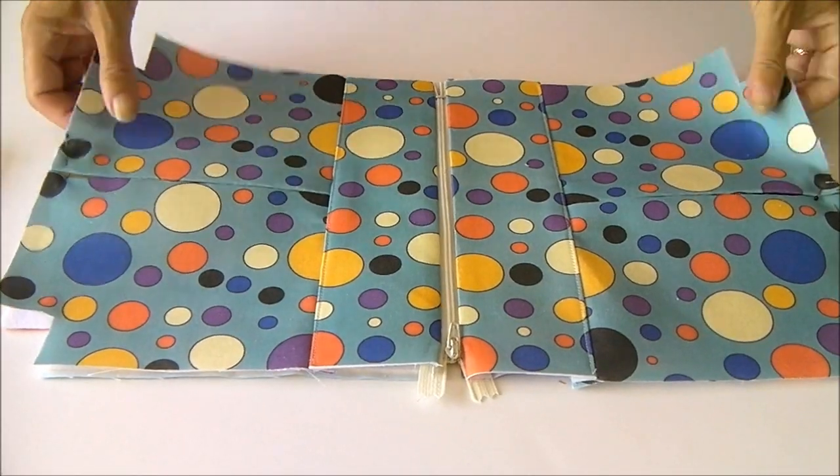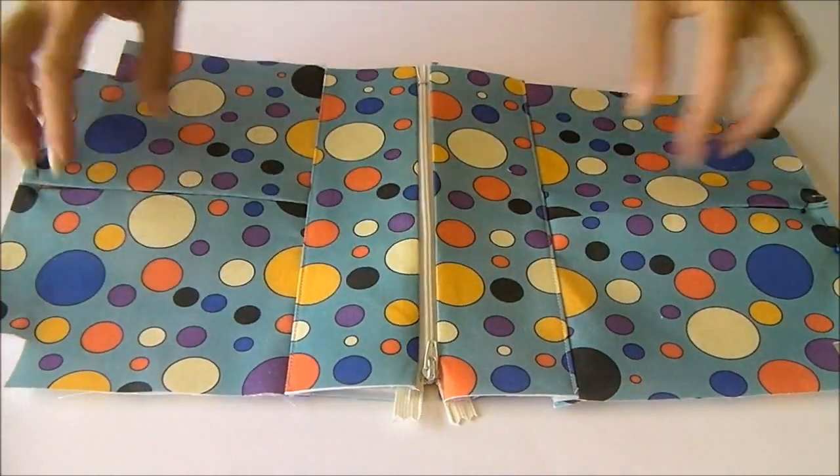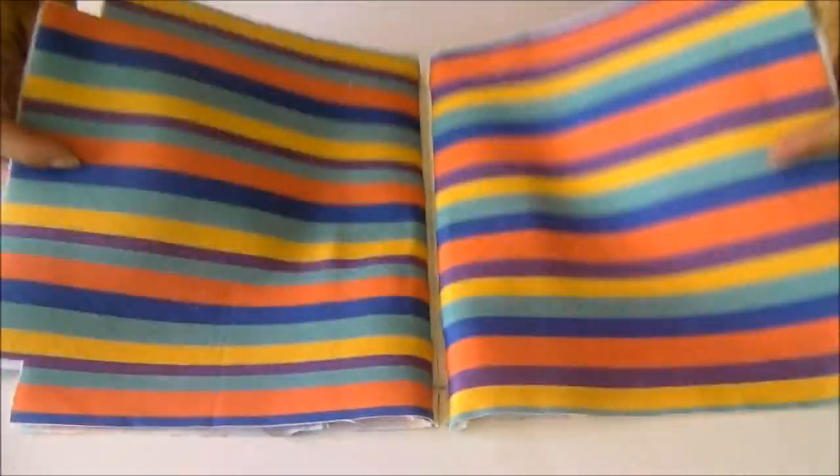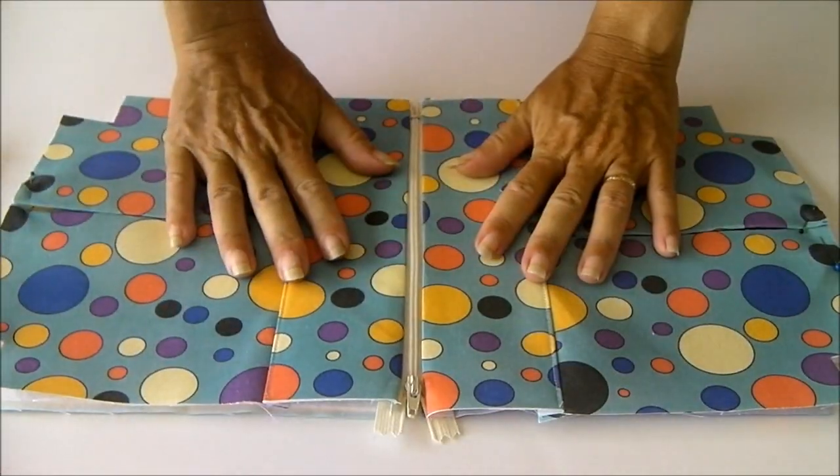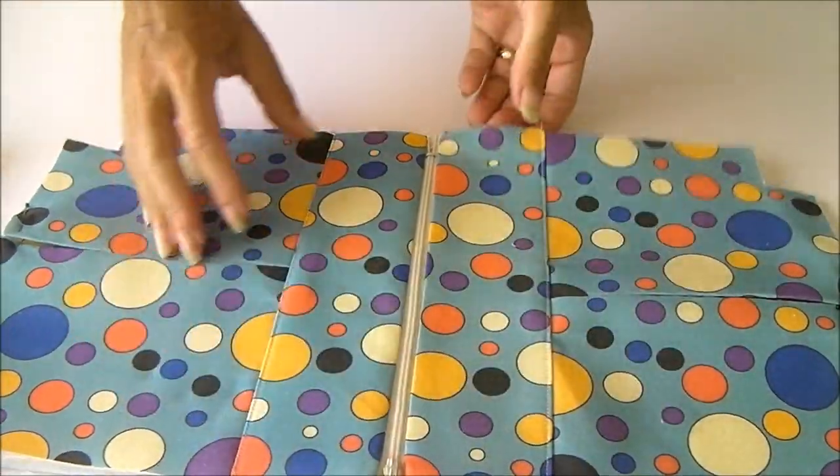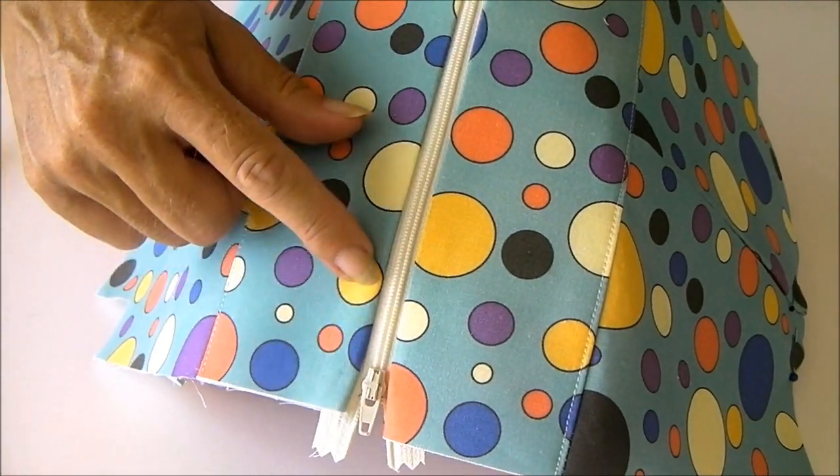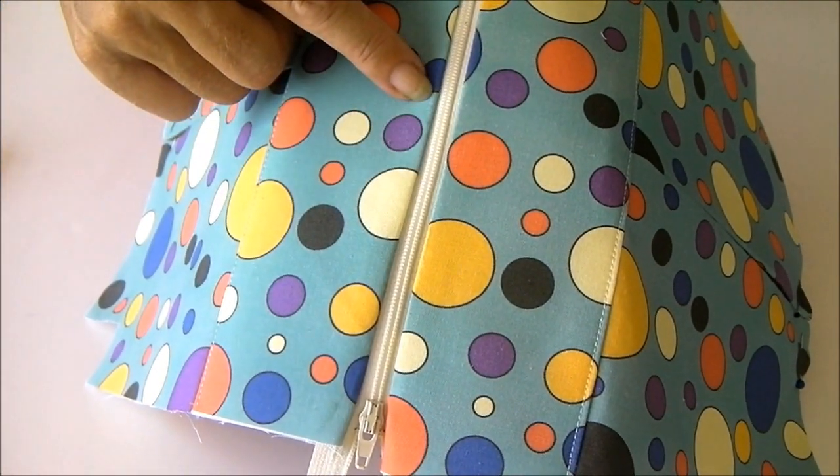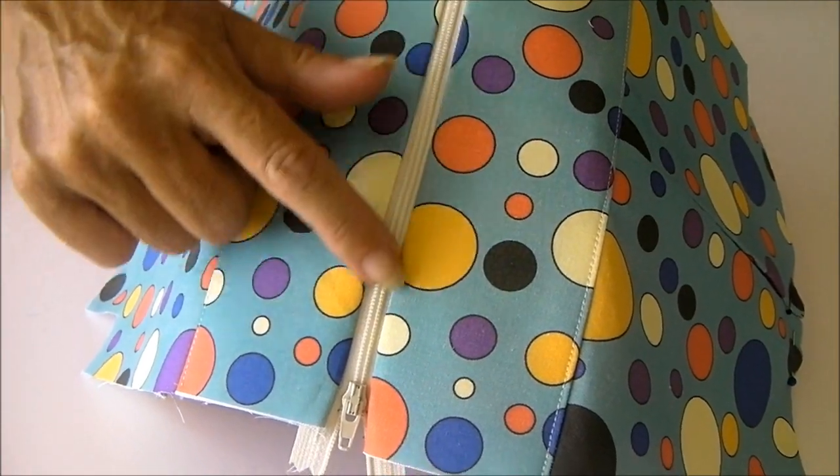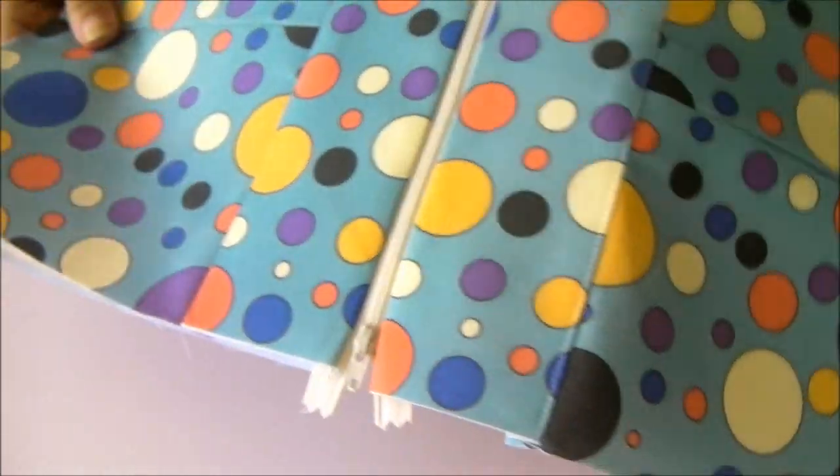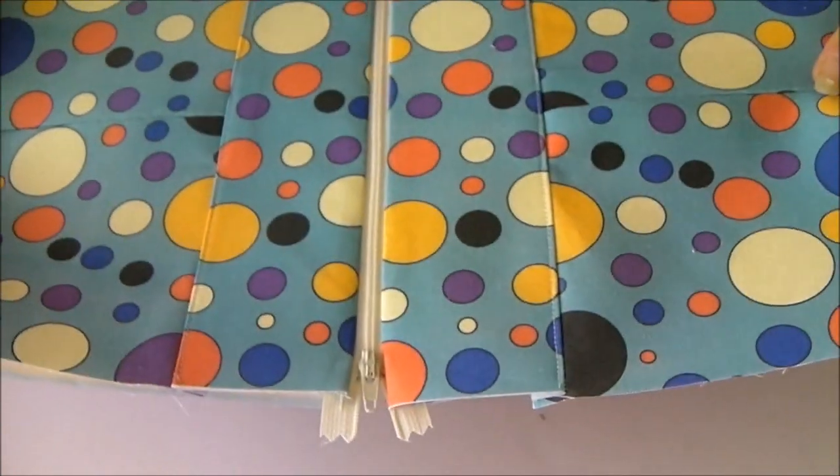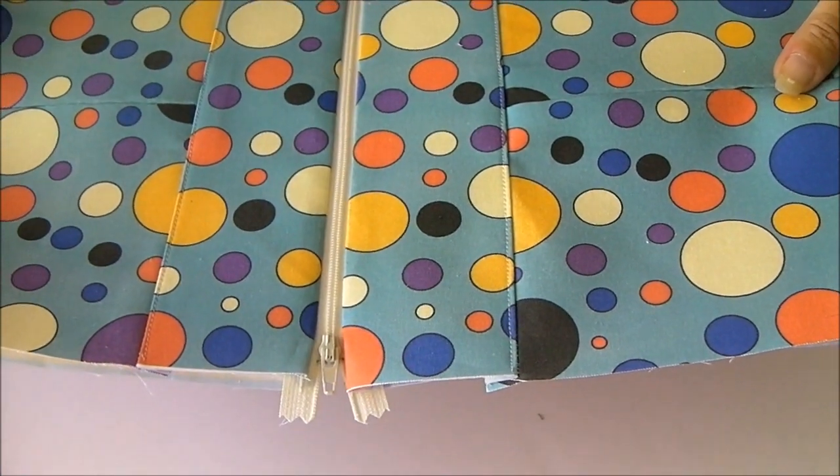The bag's now starting to take shape. We've got the zip in the center, and these are the outer panels, and the linings in place too. And now it's a good idea to top stitch the zip. Take your zipper foot again and just line a row of stitches either side of the zip, here and here. Give everything a nice press so that it's nice and flat. Once the top stitching is in place, then we'll start to assemble the bag.